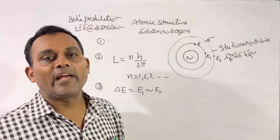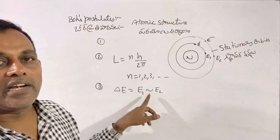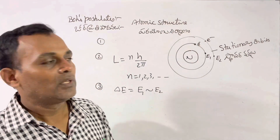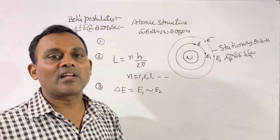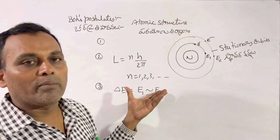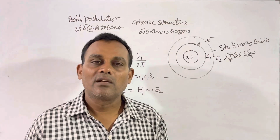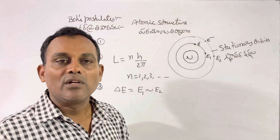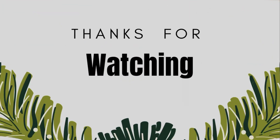The energy absorbed or emitted by an electron when it jumps from one orbit to another orbit is equal to the difference between the energies of the two orbits. These are the assumptions of Bohr for atomic structure.